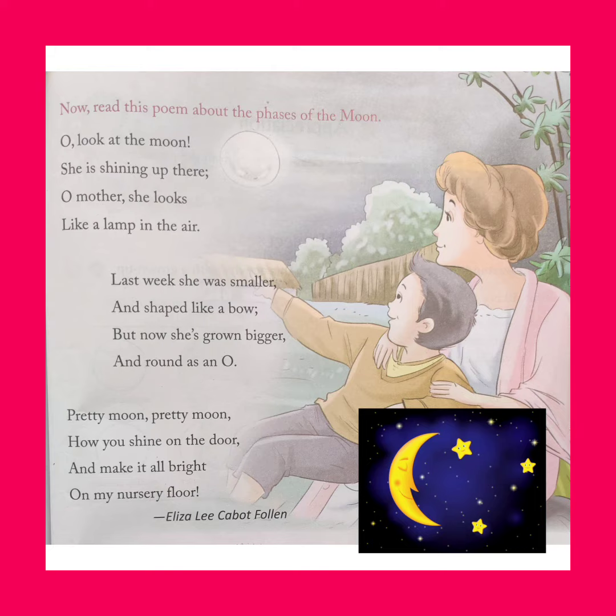In the second stanza, the child says that while the moon was shaped like a bow the previous week, it is now bigger and as round as an O.